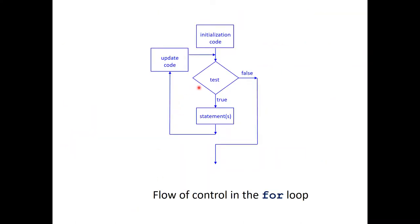To summarize the for loop flow: initialization runs once, then the condition is tested. If false, exit. If true, execute the statements, then run the update, then go back to test the condition again — not back to initialization. This repeats until the condition becomes false, then exit.